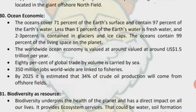Next topic: ocean economy. The ocean covers 71 percent of the earth's surface and contains 97 percent of the earth's water. Less than one percent of the earth's water is fresh water, and two to three percent is contained in glaciers and ice caps. The ocean contains 99 percent of the living space on the planet. The worldwide ocean economy is valued at around US dollar 1.5 trillion per year.